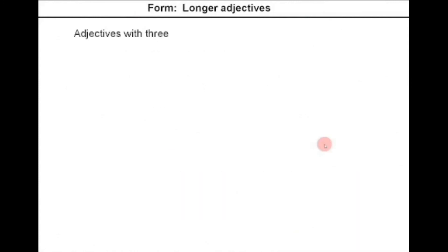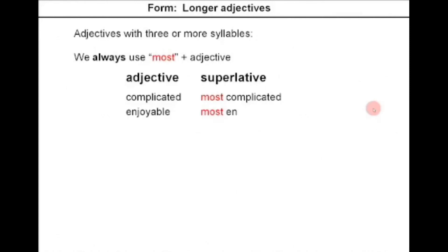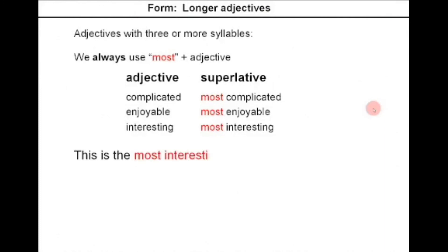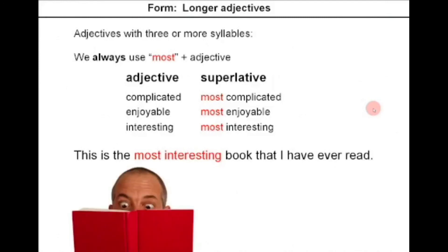With longer adjectives — adjectives with three or more syllables — we always use 'most' plus adjective. For example: complicated → most complicated, enjoyable → most enjoyable, interesting → most interesting. Example: this is the most interesting book that I have ever read.